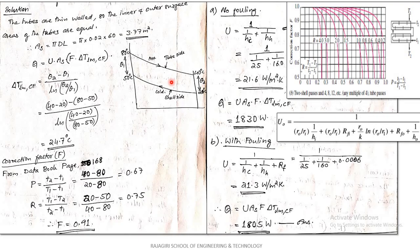For a multi-pass heat exchanger, calculate a correction factor F from the data book page 168 using the chart for two shell-pass, four (or multiple of four) two-pass arrangements. This correction factor F, multiplied with the LMTD for a counter flow heat exchanger, gives the LMTD of the multi-pass heat exchanger. The heat transfer rate is then q = U·A·F·ΔT_lm,CF.